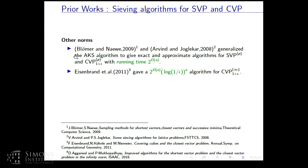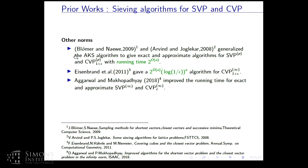I'll give the value of that constant in later slides. Eisenbrand and others improved this algorithm in the L-infinity norm, giving an algorithm for approximate CVP up to approximation factor 1+ε with a running time that has better dependence on ε: it ran in time 2^(O(n · log(1/ε))). In joint work with Divesh Aggarwal, we improved the running time for exact and approximate SVP and CVP in the L-infinity norm — I'll talk more about this because the LP norm algorithm is just a generalization of it.